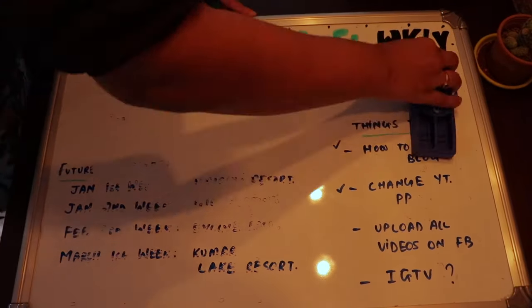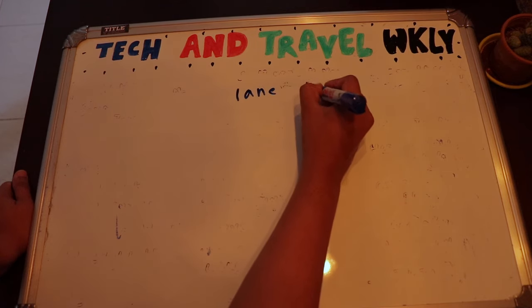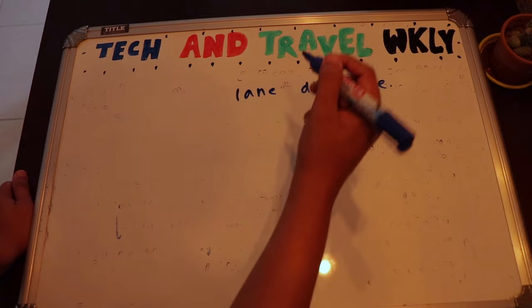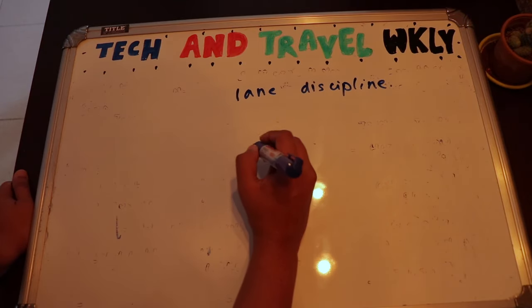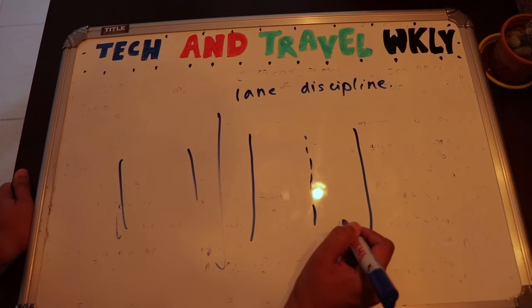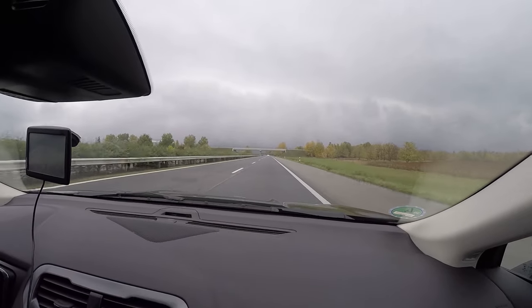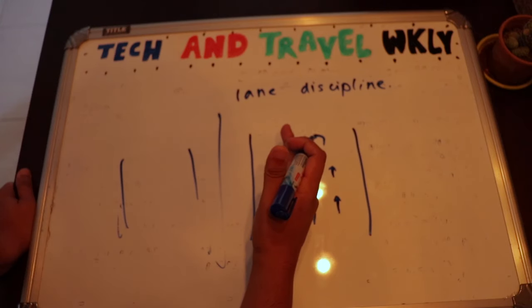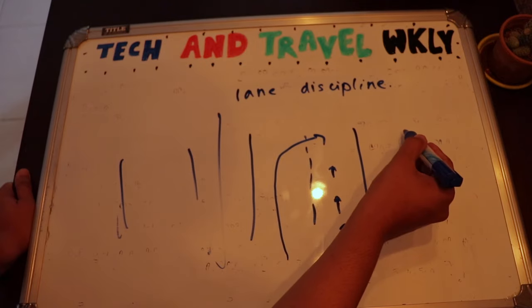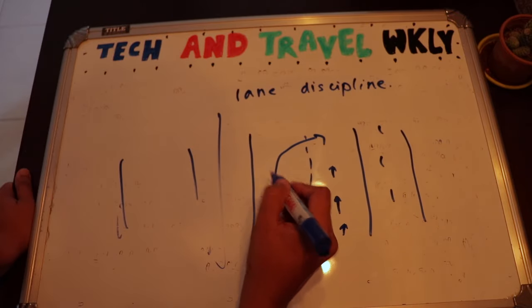Lane discipline is very important in Europe. On a highway with four lanes, most of the time you must use the rightmost lane. The leftmost lane is only for overtaking — use it to pass and then return. In a three-lane highway, trucks and lorries use the far right lane, regular cars use the middle lane, and the leftmost lane is only for passing.